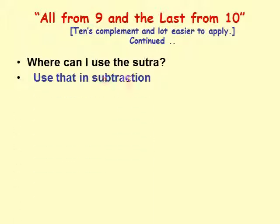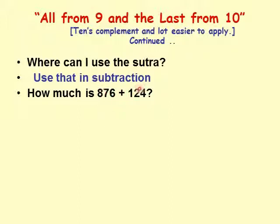We can use this sutra in subtraction. Let's make an observation: how much is 876 plus 124? Notice that 124 is 'all from 9 and last from 10' of 876. If we add the two together, we get 1000 — that's 1 followed by zeros. The number of zeros equals the number of digits in the original number.